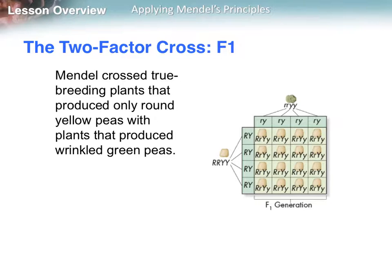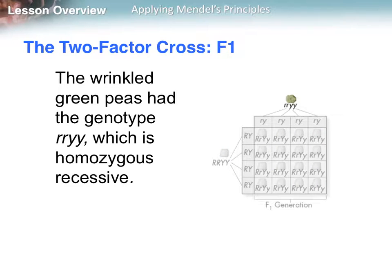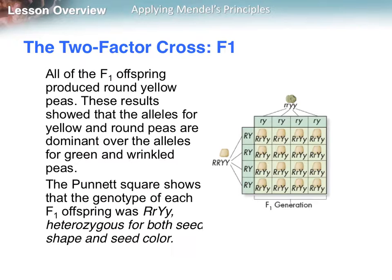Mendel crossed true breeding plants that produced only round and yellow peas with plants that produced wrinkled green peas — a completely dominant plant for two traits crossed with a completely recessive plant for two traits. The round and yellow peas had the genotype big R, big R (homozygous dominant) and big Y, big Y (homozygous dominant for color). The wrinkled green peas had little r, little r and little y, little y. Every single one of his offspring were round and yellow, showing that the alleles for yellow and round were dominant over green and wrinkled.